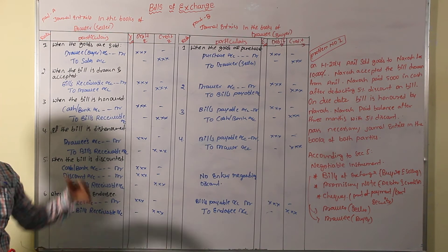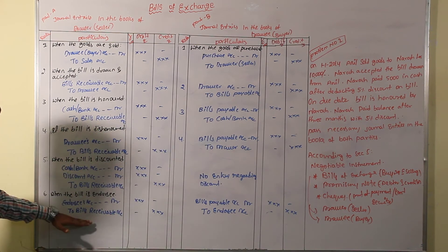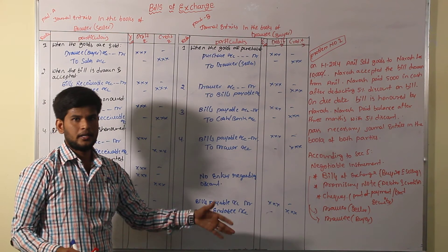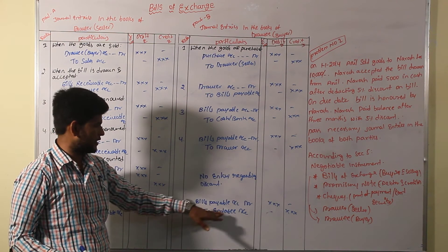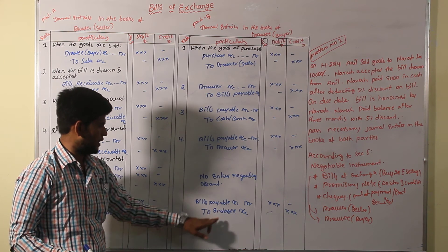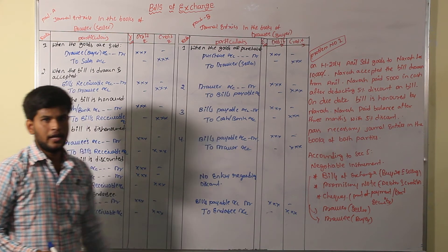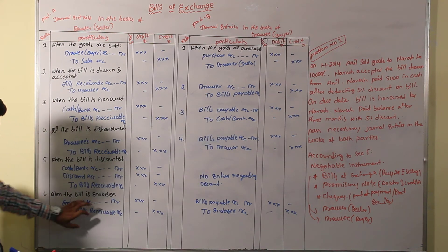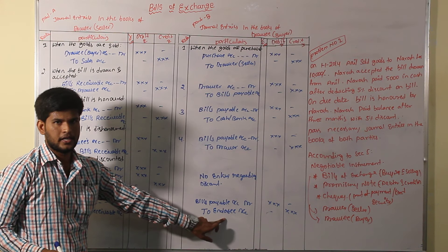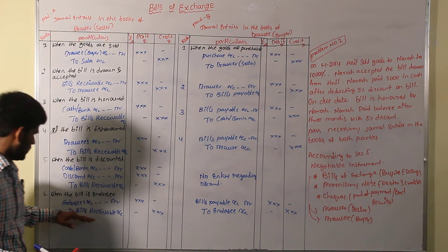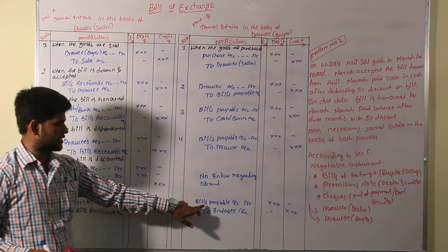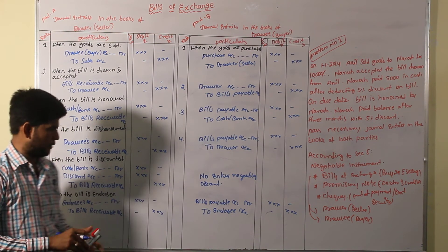The seller can transfer the bill to another party and enter the entry. The buyer can also transfer the bill to another party — enter the entry as bills receivable account debit, to endorsee account, opposite side. Endorsee bill comes to the endorsee credit side, and credit bills receivable comes to the debit side as bills receivable.